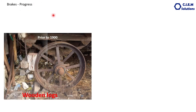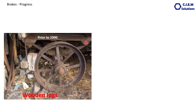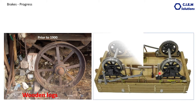Prior to 1900, people used wooden logs as the braking agent. This is a wooden log, and these are the leverages of the wooden log. This braking mechanism was used mainly in slow-moving vehicles that ran at a maximum of 10 to 15 kilometers per hour, like steam locomotives, horse carts, etc.